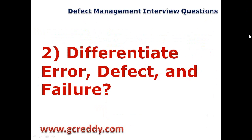Earlier we discussed Software Development Life Cycle and Software Testing Life Cycle. This time, the grand one: Software Application Life Cycle. It has three phases. The first one is the Development Phase. In the Development Phase, if developers find any mismatch, they call it an Error or Mistake.